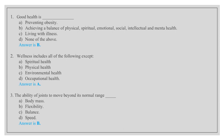Wellness includes all of the following except: spiritual health, physical health, environmental health, occupational health. Answer is A, spiritual health. The ability of joints to move beyond its normal range: body mass, flexibility, balance, speed. Answer is B, flexibility.